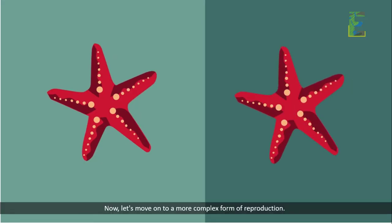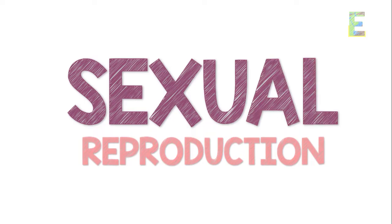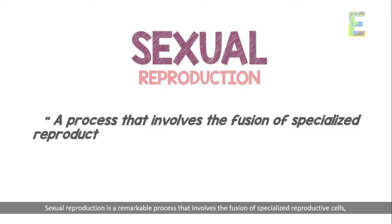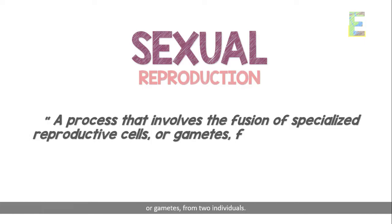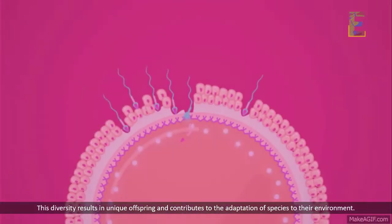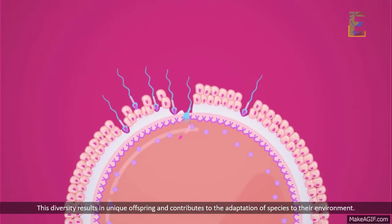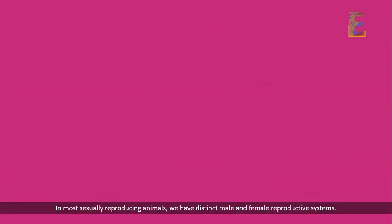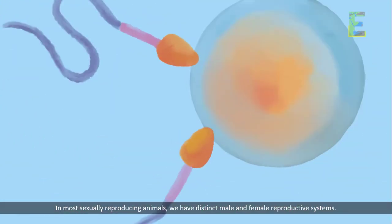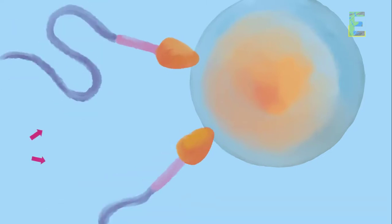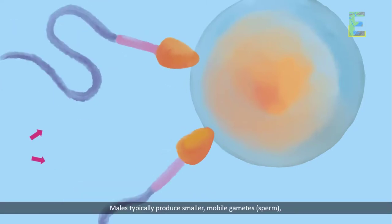Now let's move on to a more complex form of reproduction: sexual reproduction. Sexual reproduction is a remarkable process that involves the fusion of specialized reproductive cells, or gametes, from two individuals. This diversity results in unique offspring and contributes to the adaptation of species to their environment.